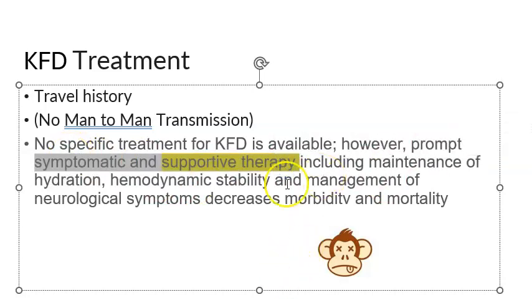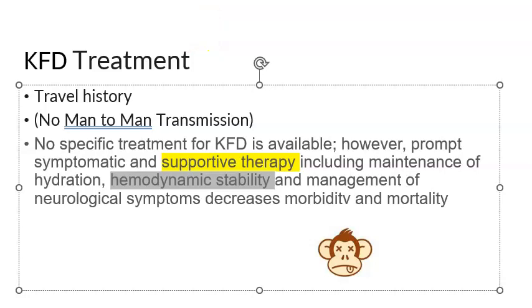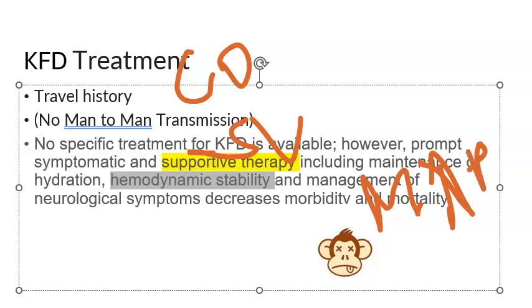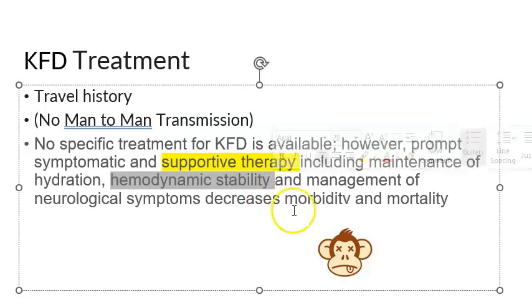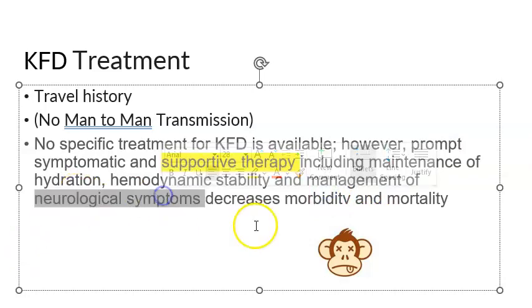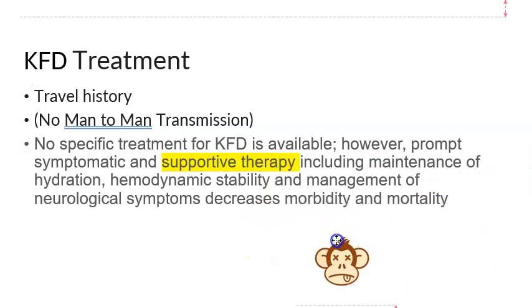Supportive treatment includes maintaining hydration with IV fluids, and hemodynamic stability — monitoring blood volume, cardiac output, stroke volume, mean arterial pressure, organ perfusion, vasodilation, vasoconstriction, fluid balance, and urine output. The patient must be hospitalized. Neurological symptoms must also be managed, and morbidity and mortality can be reduced with these measures.